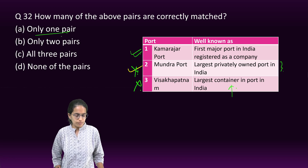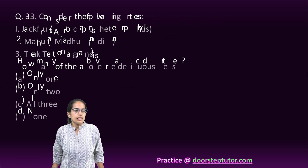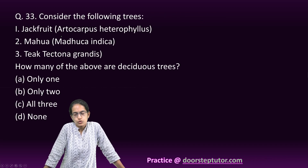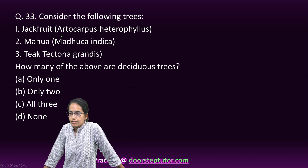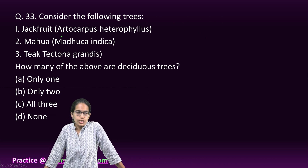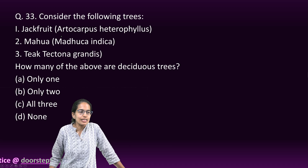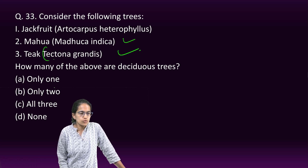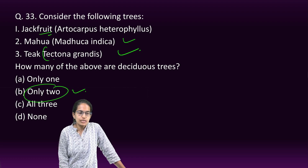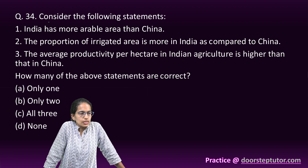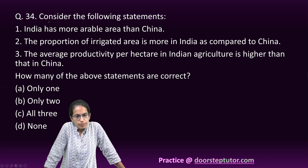The next question asks which among the given trees are deciduous. Jackfruit is an evergreen tree. Mahua is deciduous and Teak is also deciduous. So two of the given options — Mahua and Teak — are deciduous plants, while Jackfruit is evergreen.